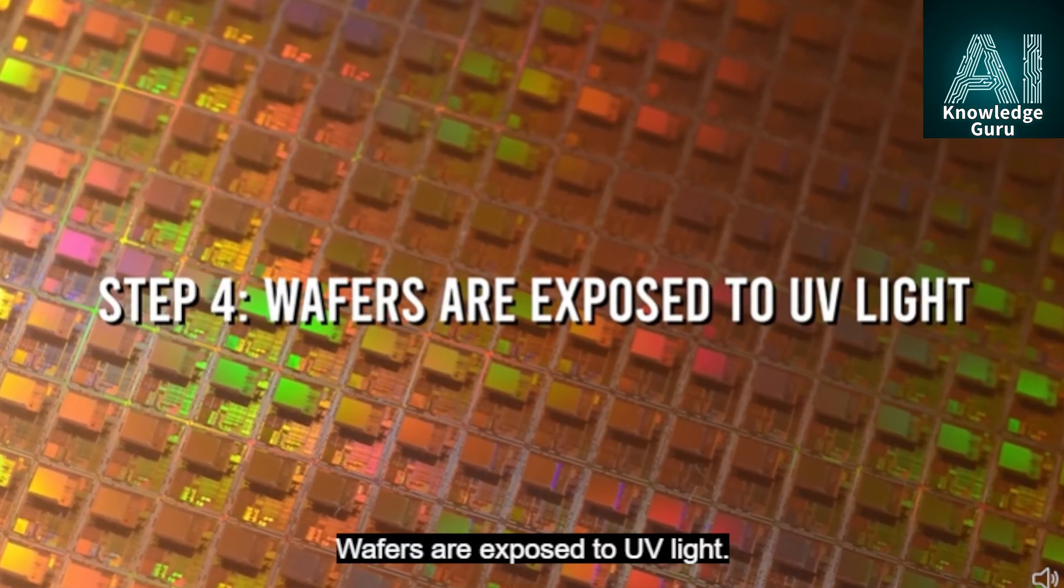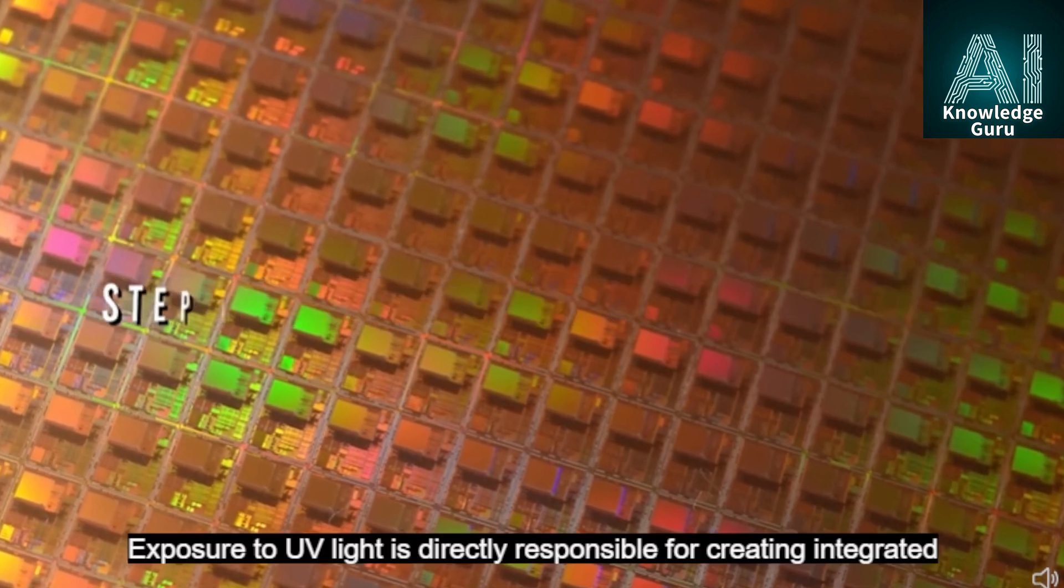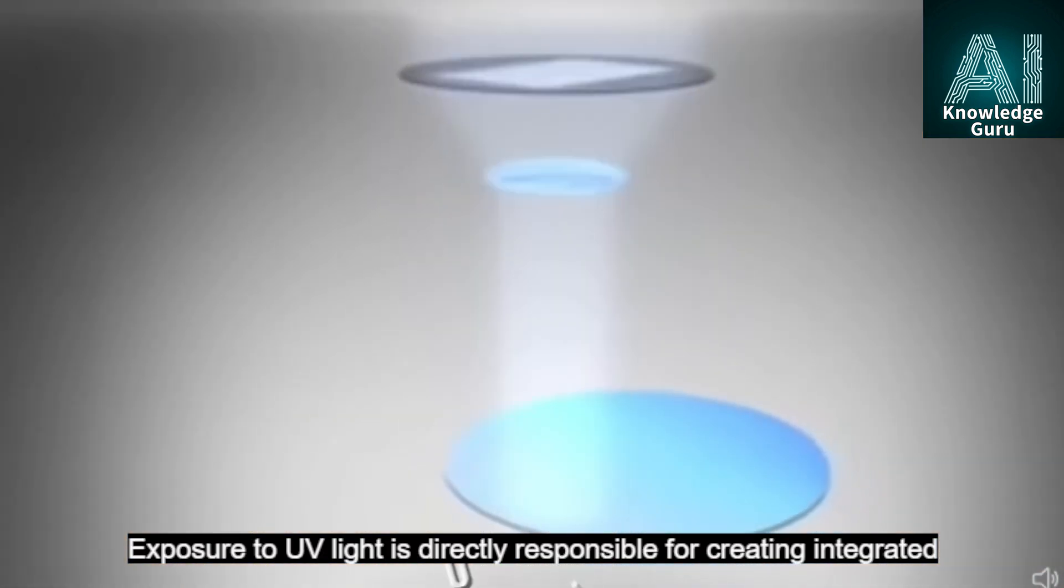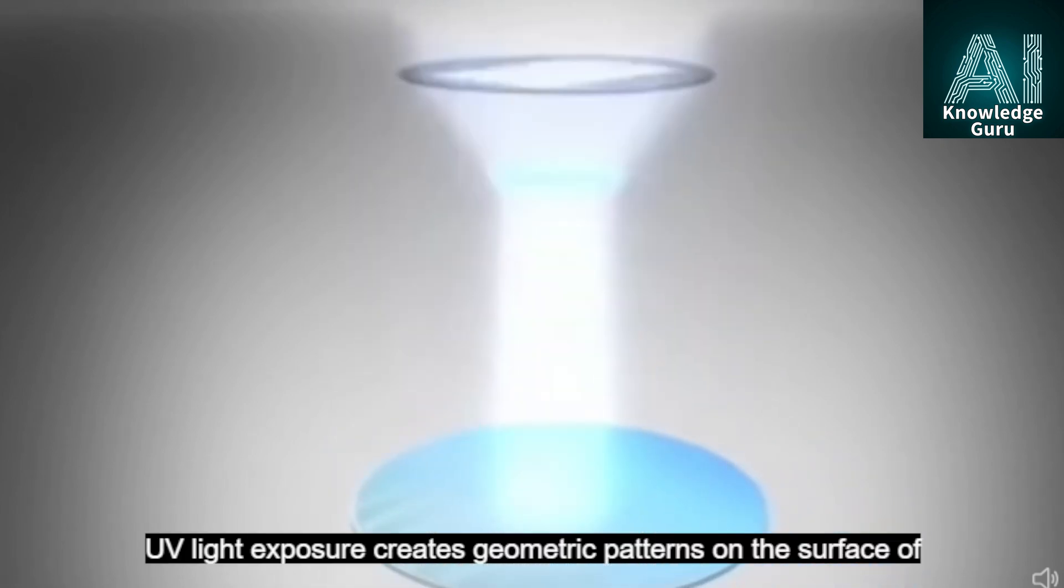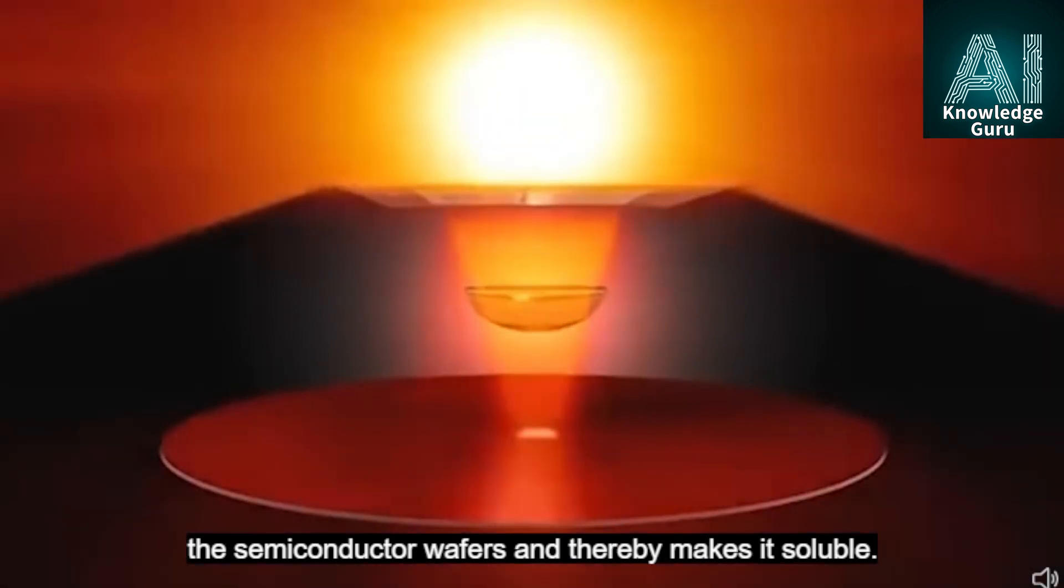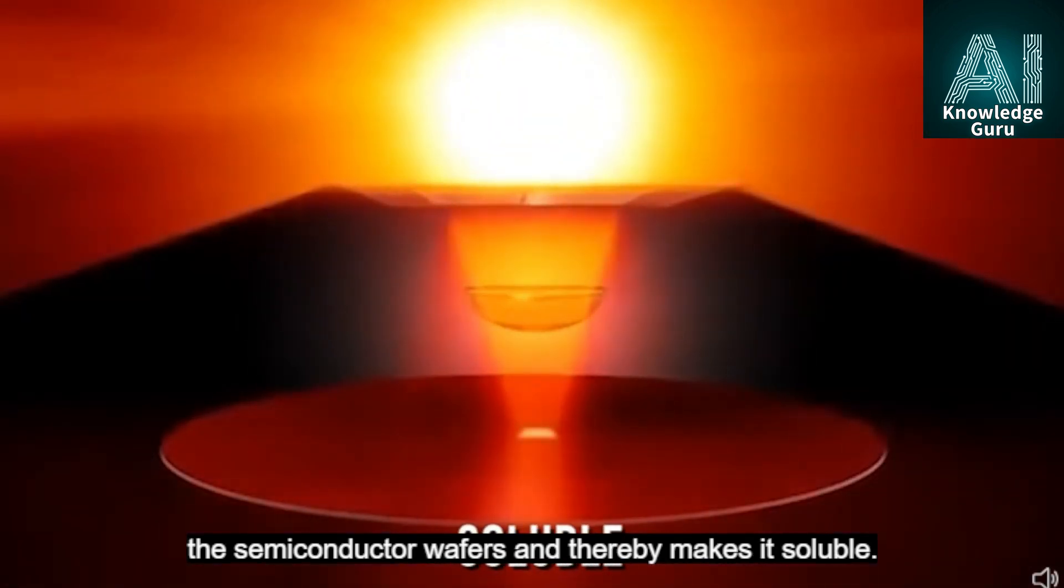Step 4: Wafers are exposed to UV light. Exposure to UV light is directly responsible for creating integrated circuits as well as computer chips. UV light exposure creates geometric patterns on the surface of the semiconductor wafers and thereby makes it soluble.